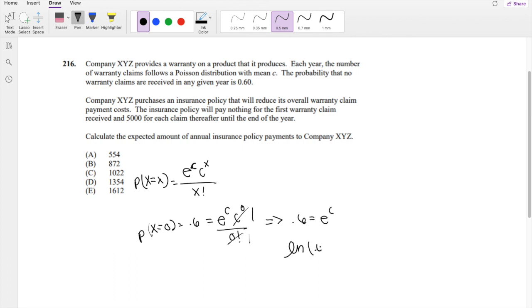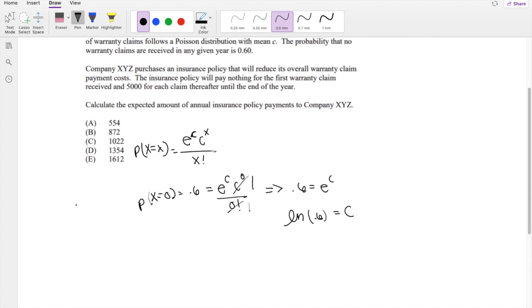So you get 0.6 is equal to E to the C. So we can take the natural log on both sides. Natural log of 0.6 is equal to C. So that's what we get for C. Company XYZ purchased an insurance policy that would reduce its overall warranty claims payment cost.